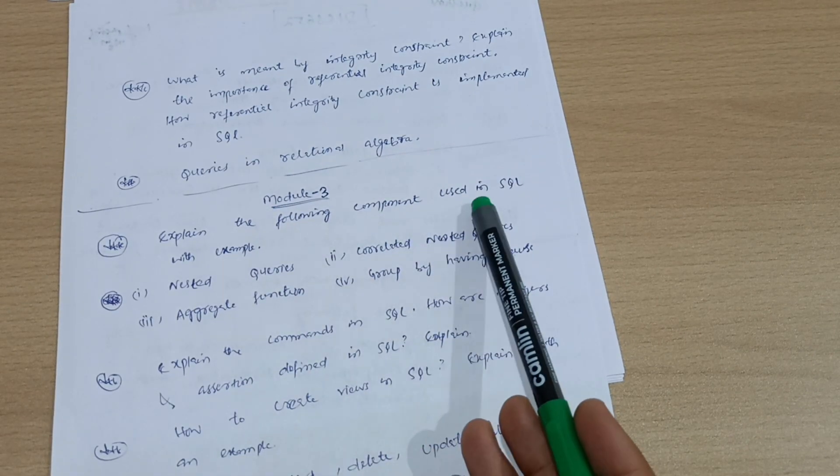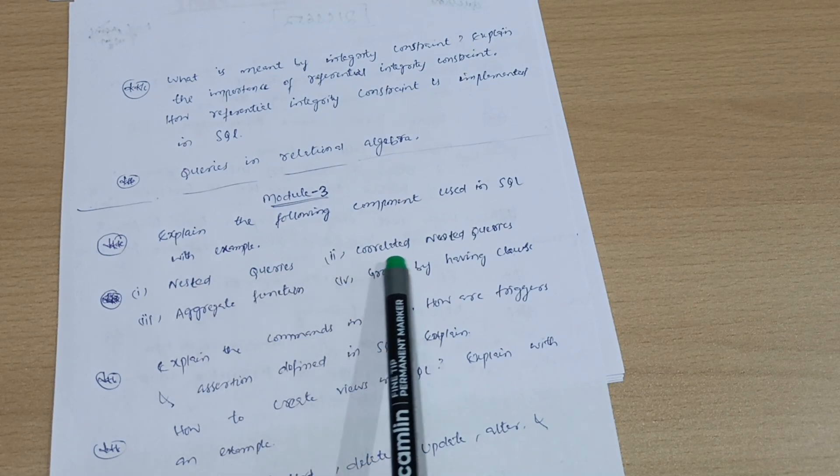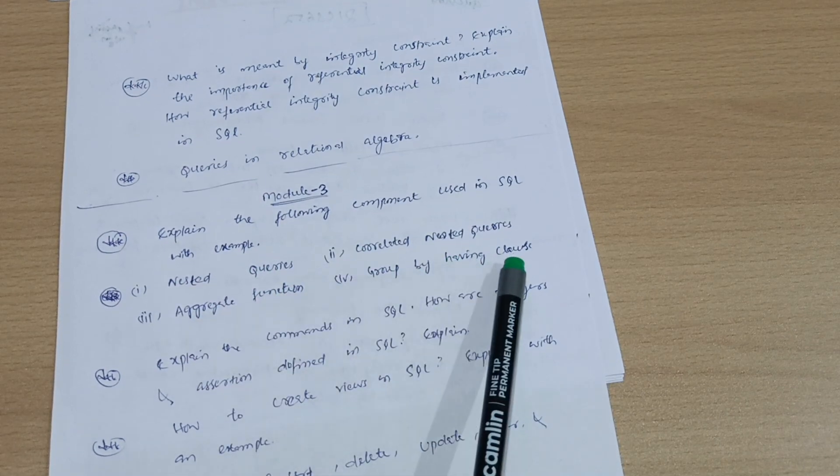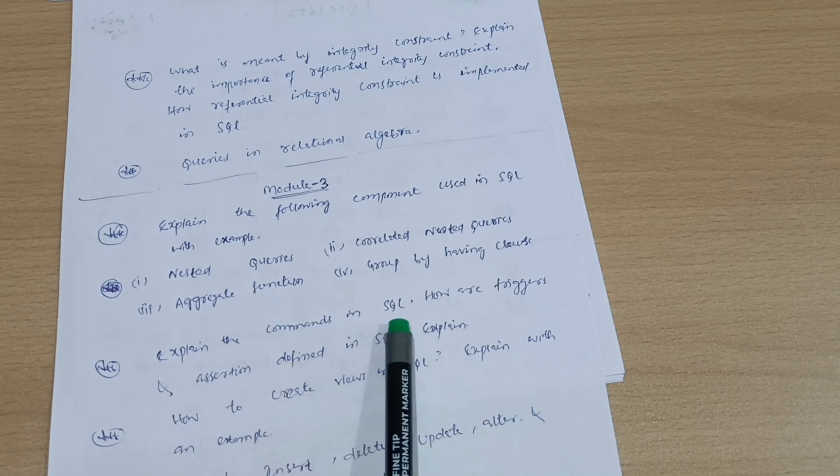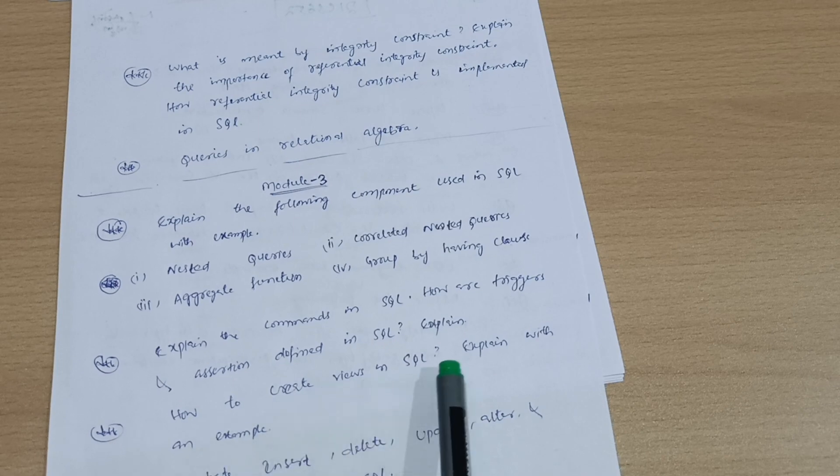Module 3: Explain the following components used in SQL with examples - nested queries, correlated nested queries, aggregate functions, GROUP BY, HAVING clause. Explain the commands in SQL. How are triggers and assertions defined in SQL? Explain how to create views in SQL with examples.